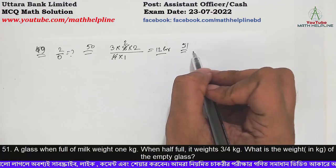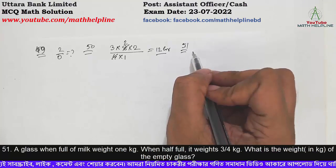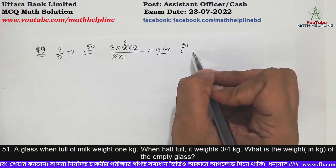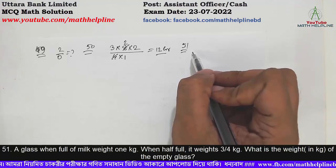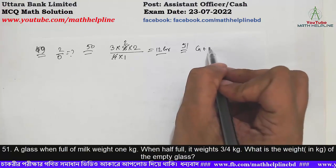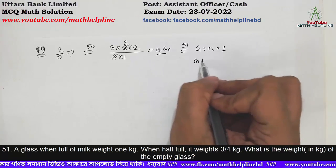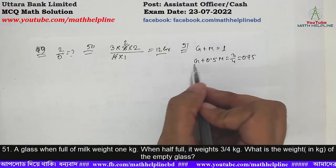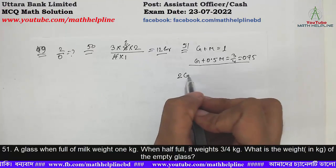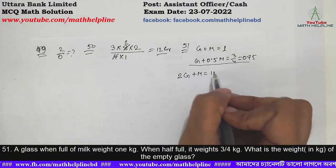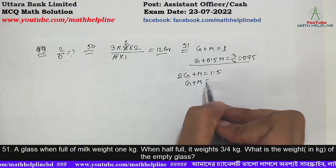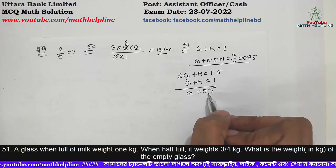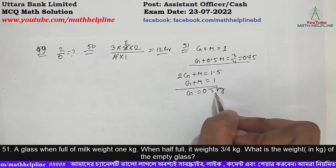Problem number 51: A glass when full of milk weighs 1 kg. When half full, it weighs 3/4 kg. What is the weight of the empty glass? Glass plus milk equals 1 kg. Glass plus half milk (0.5m) equals 0.75. Multiplying the second equation by 2: 2g plus m equals 1.5. Subtracting: g plus m equals 1. So g equals 0.5 kg. The empty glass weighs 0.5 kg.